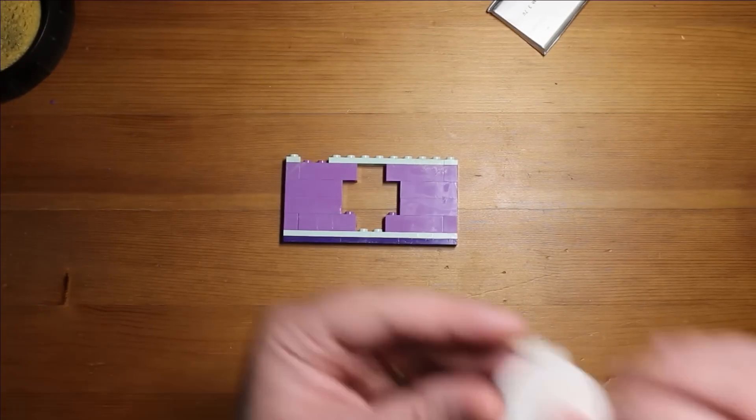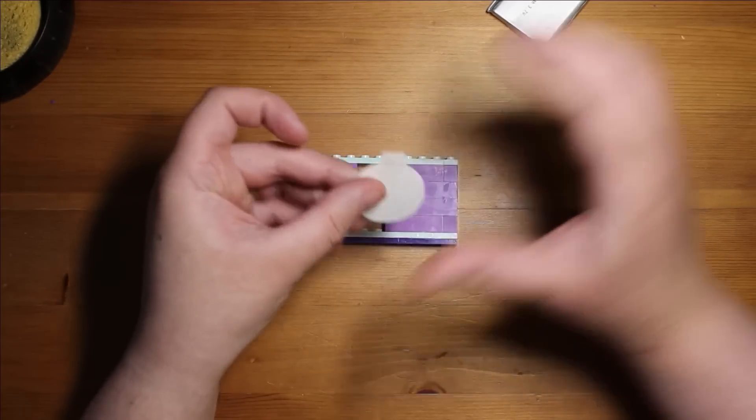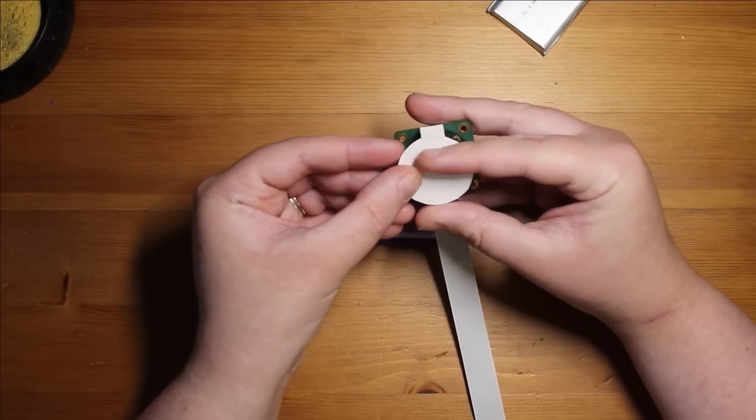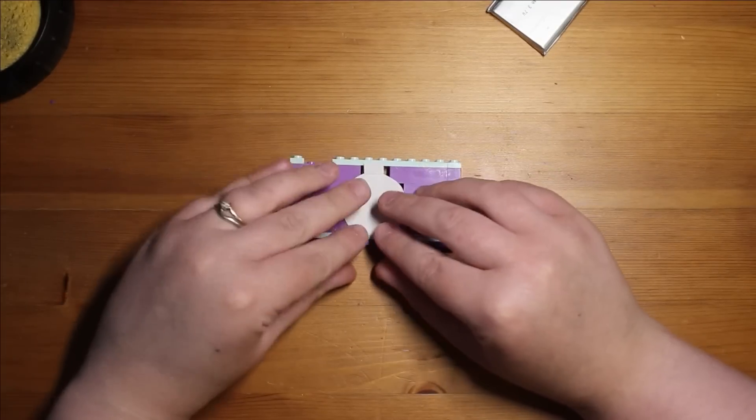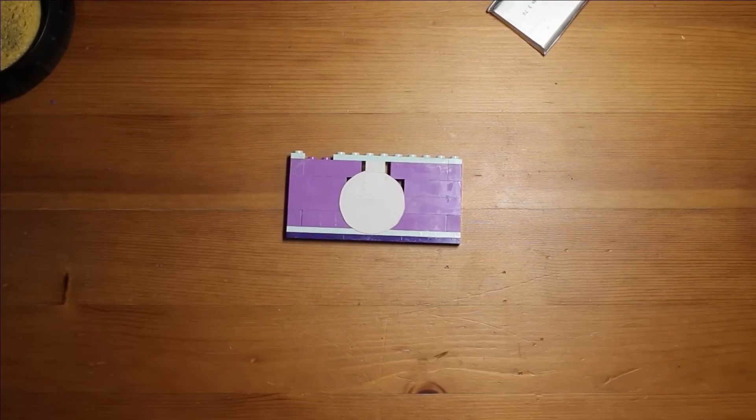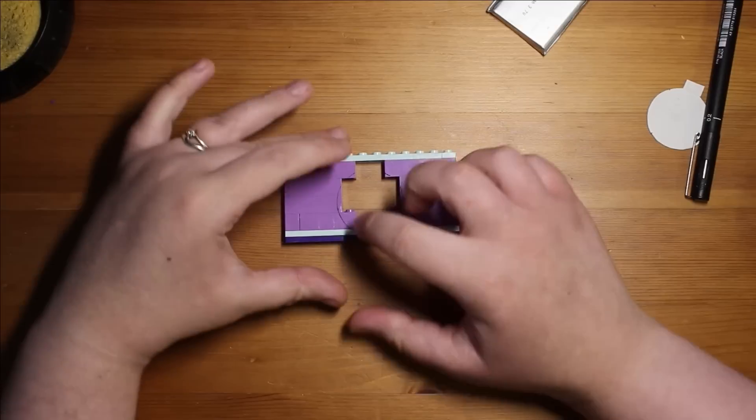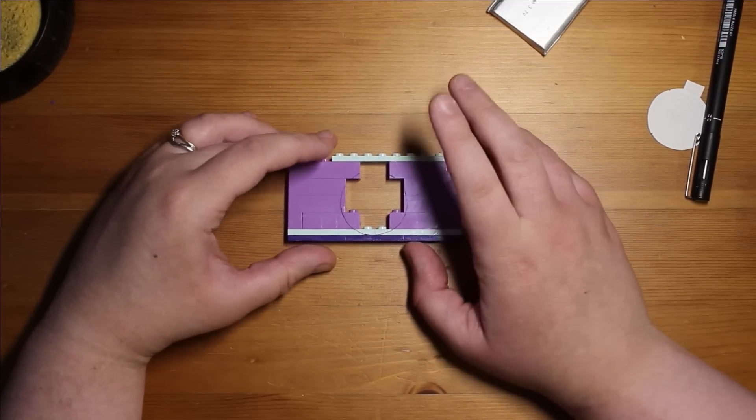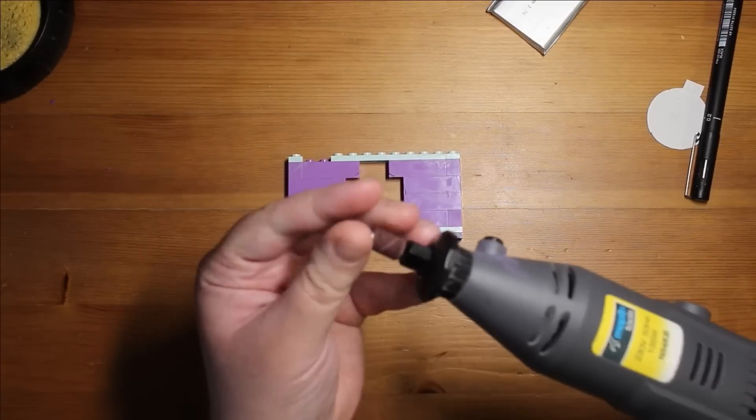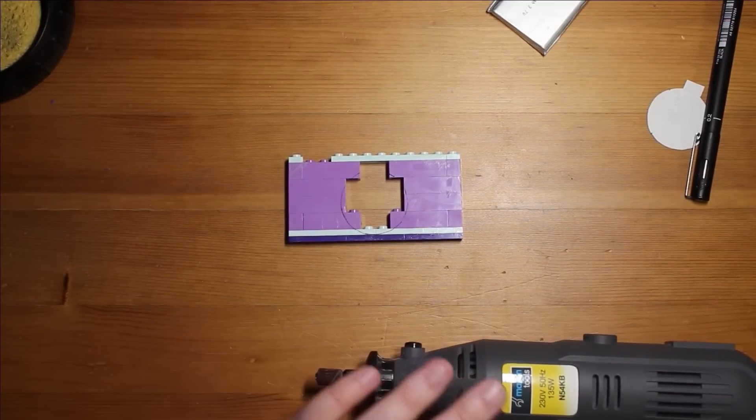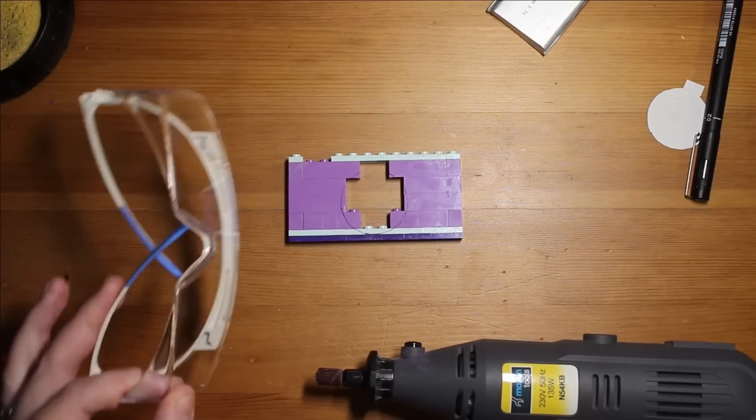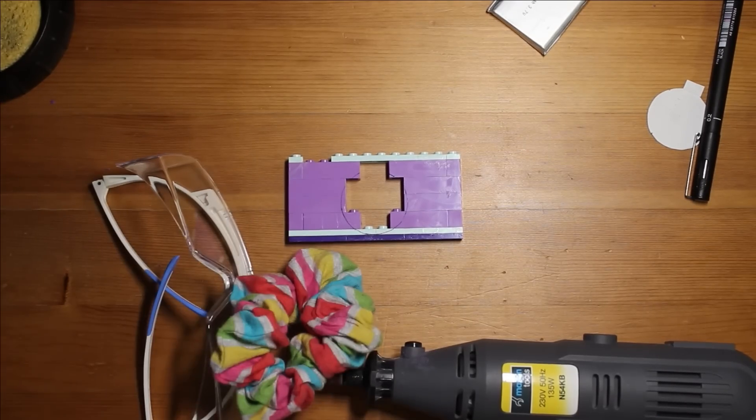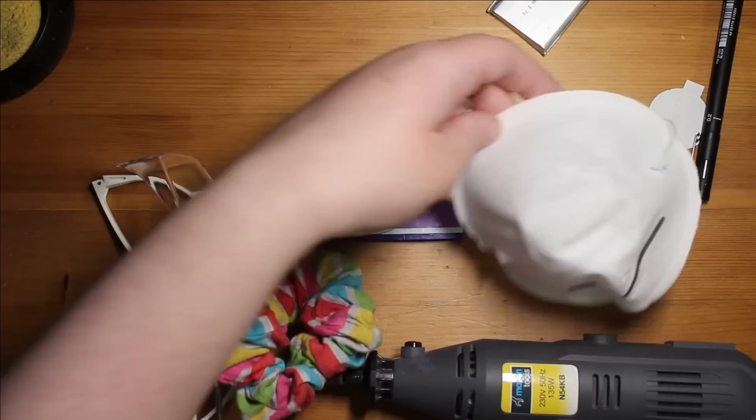So next I've made myself a little template. This is the size of the sensor that I want to stick out through the Lego. So I'm going to put this on here, draw a line. So this is the Lego that I need to remove to be able to get it through. So I'm going to use a rotary tool to remove that. However, I'm going to need some safety specs, a hairband because I've got long hair to tie my hair back and a mask because it produces quite a lot of dust.